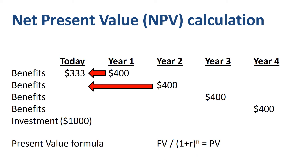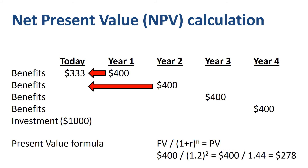What is the present value of a $400 benefit that we expect two years from now? We take the nominal amount of $400 and divide it by 1.2 to the power of 2, as we need to take two steps: from year 2 to year 1, and from year 1 to today. This is the same as $400 divided by 1.2 times 1.2, or $400 divided by 1.44, which equals $278.